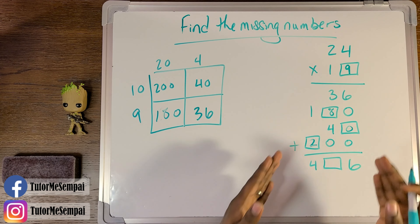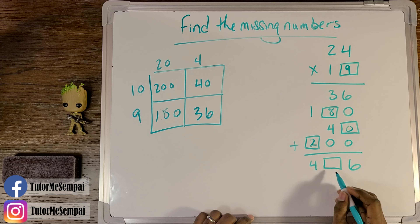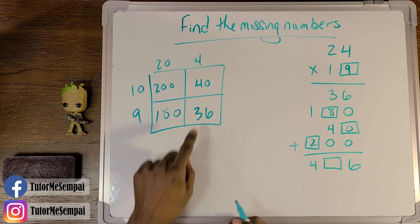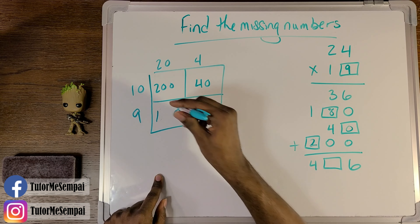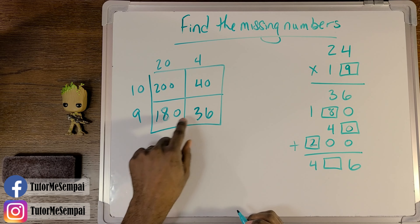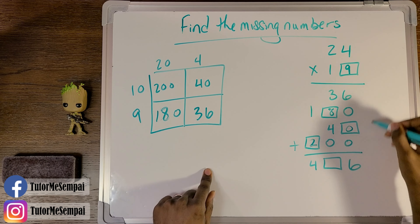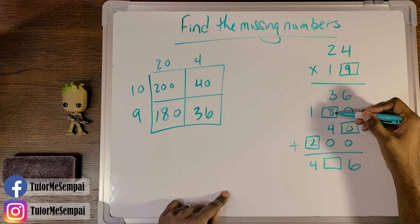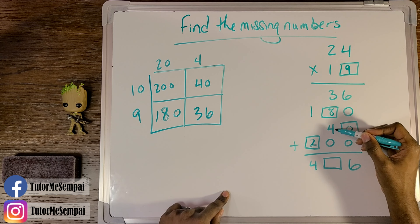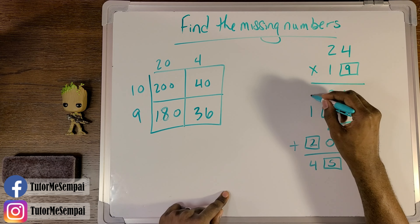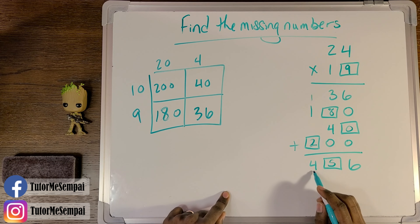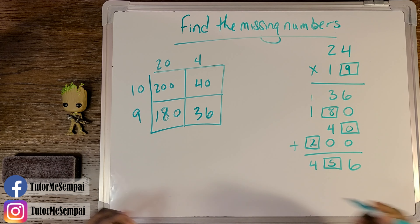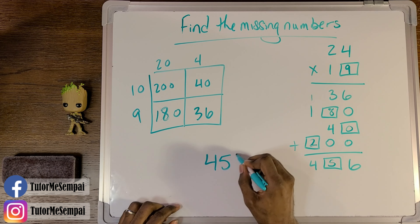So we filled in all of these things, but we still have to fill in this last one — all you have to do now is add all your numbers: 200, 40, 180, and 36. When we add everything, we have 6, then 3 plus 8 gives us 11, plus 4 gives us 15, and we carry our 1. Then 1 plus 1 plus 2 gives us 4. So our final box has to be 5, and our final answer is going to be 456.